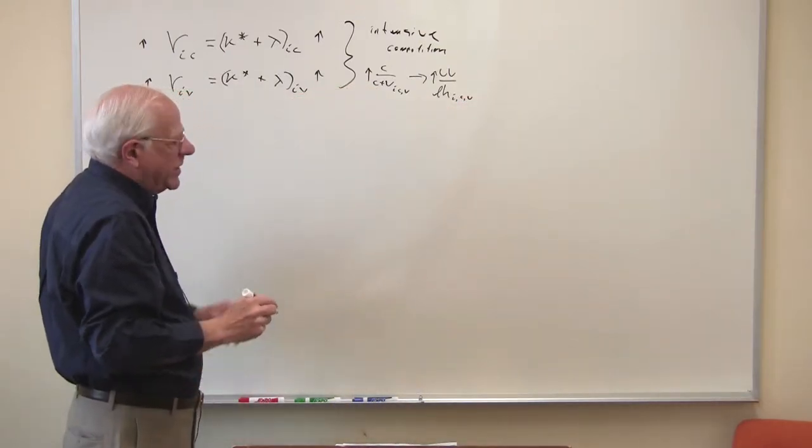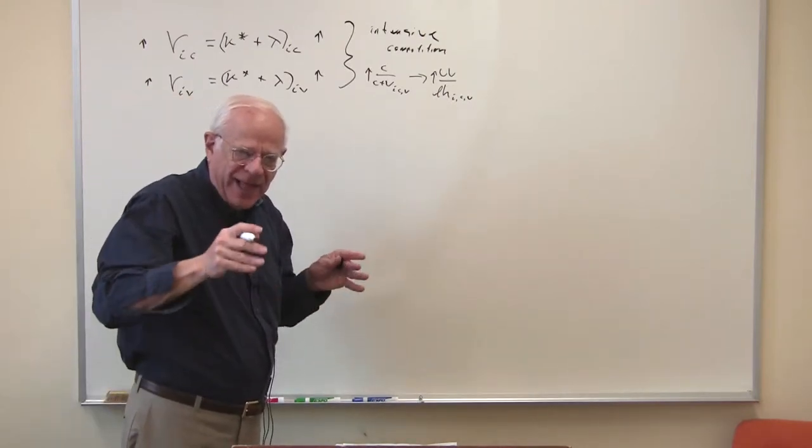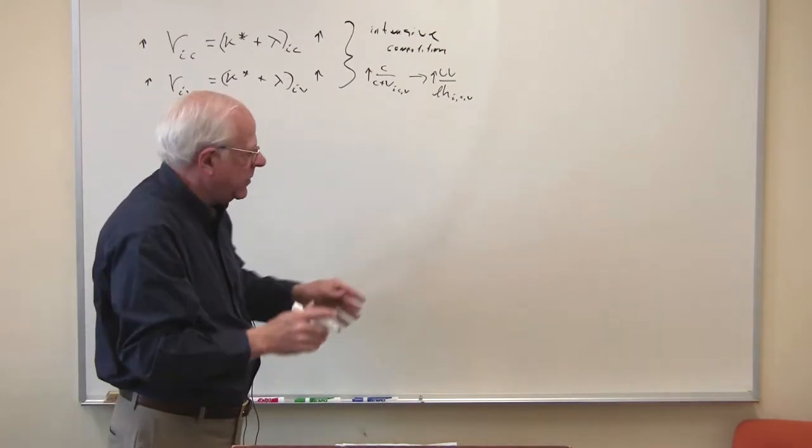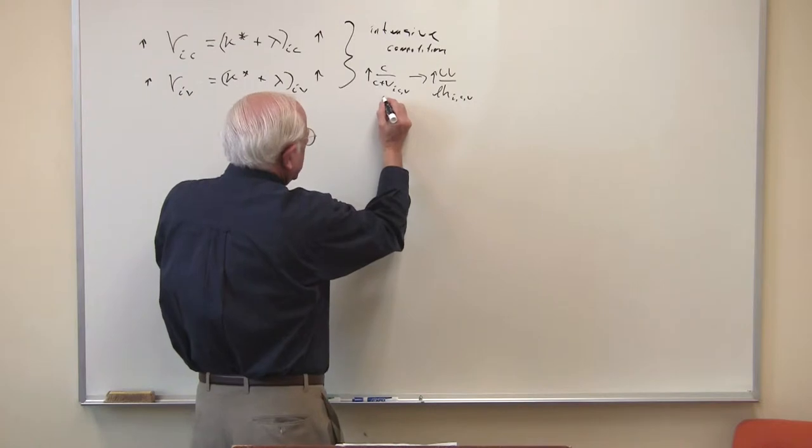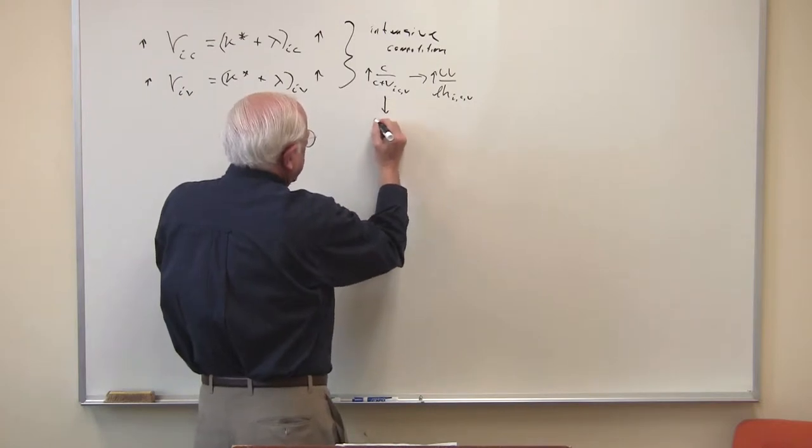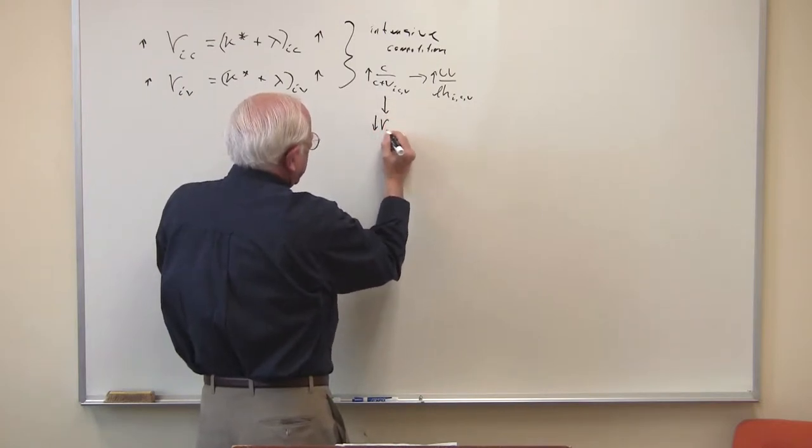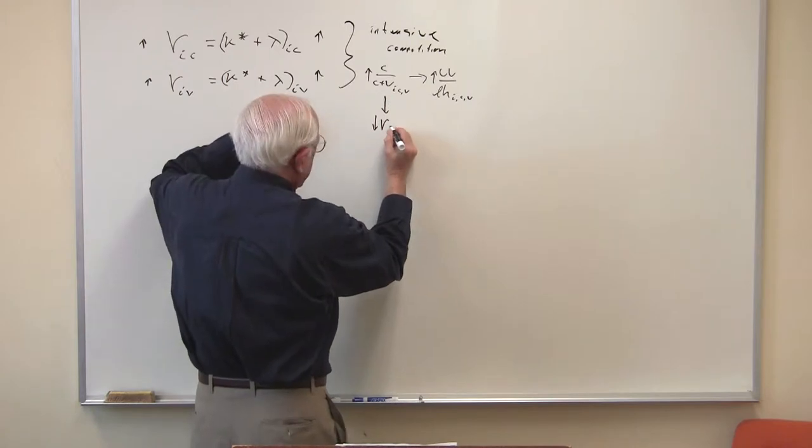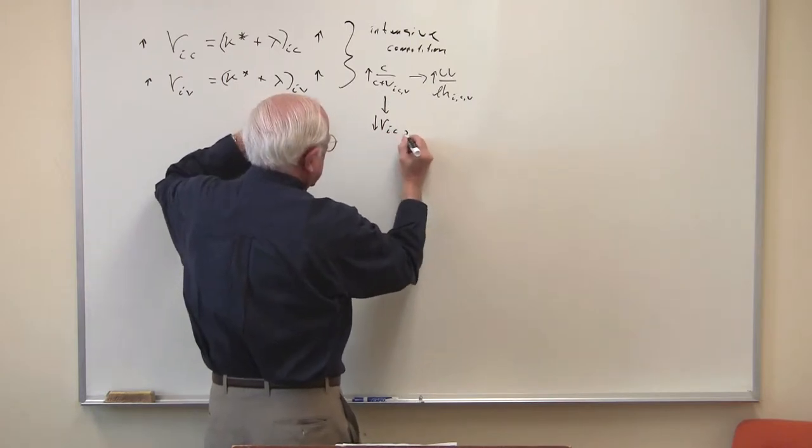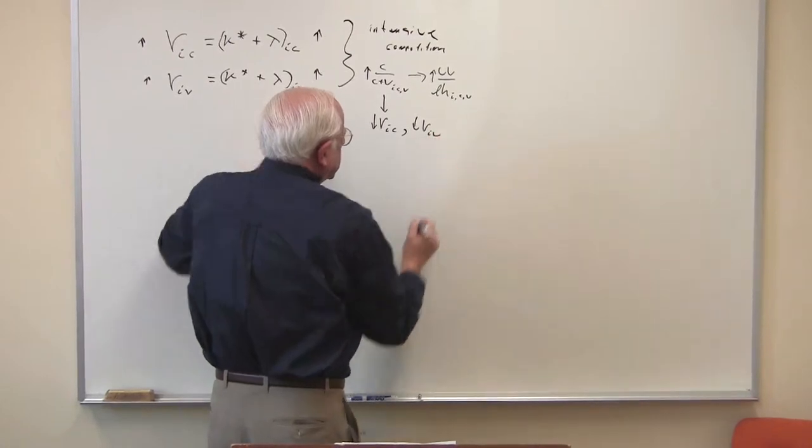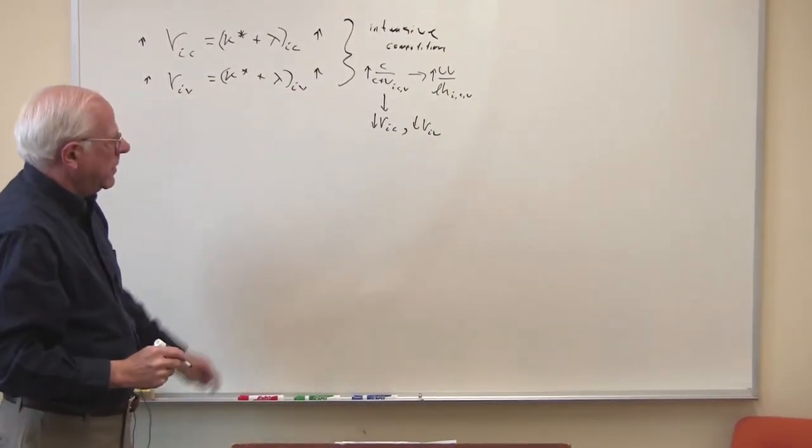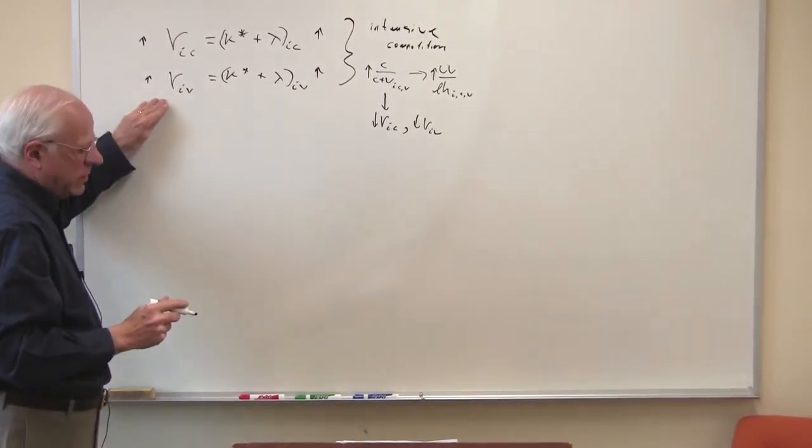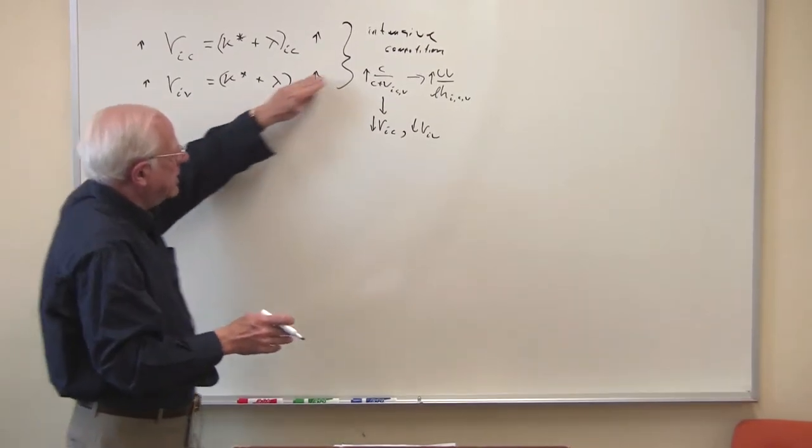And as I explained in that tableau that we put on the whiteboard, this in turn will produce a declining rate of profit. Where? Everywhere. So you've got a startling result.